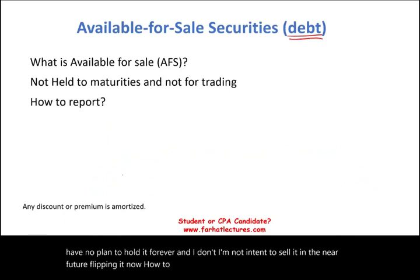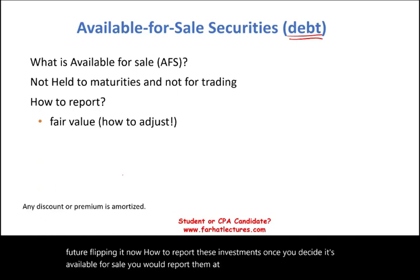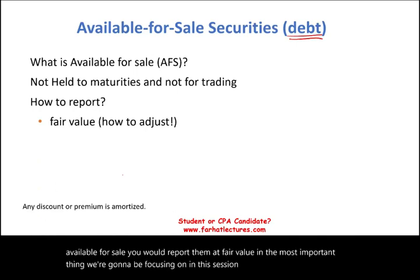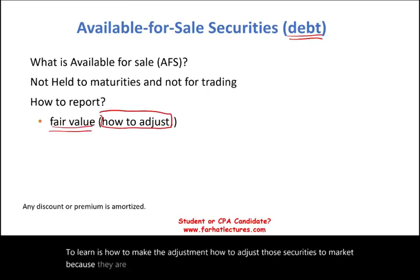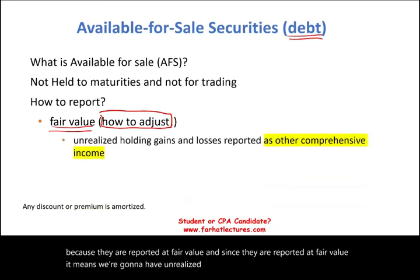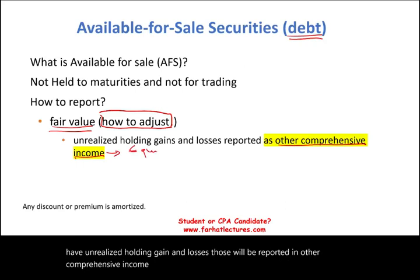Once you decide it's available for sale, you report them at fair value. The most important thing we'll focus on in this session is how to make the adjustment — how to adjust those securities to market. Since they are reported at fair value, we will have unrealized holding gains and losses, and those will be reported in other comprehensive income, OCI. In other words, they are reported on the balance sheet as part of equity.